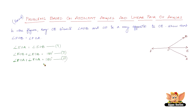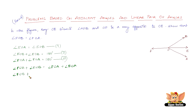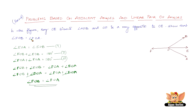From equations two and three, both equal 180 degrees, so we can equate them: angle FOB plus angle EOB equals angle FOA plus angle EOA. From equation one, angle EOA equals angle EOB, so we replace angle EOB with angle EOA. The term angle EOA appears on both sides with the same sign, so we cancel it, giving us angle FOB equals angle FOA. That is what we had to prove.